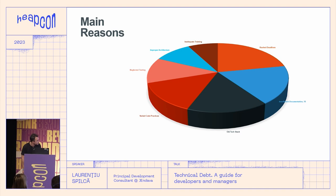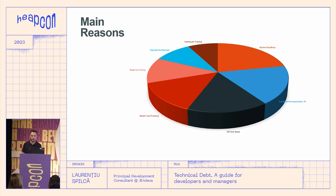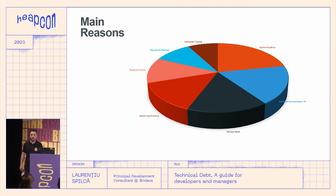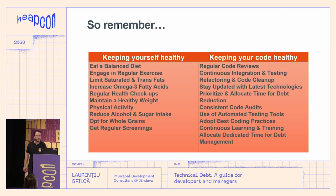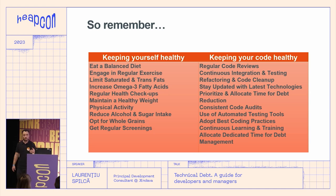The main causes of technical debt include: inadequate training, rushed deadlines, insufficient documentation, outdated tech stack, varied code practices with no discipline or documented process, neglected testing, and improper architecture. These are the common causes that lead to technical debt accumulating.